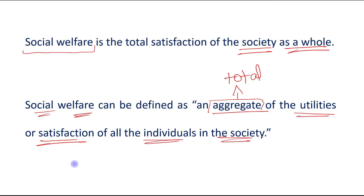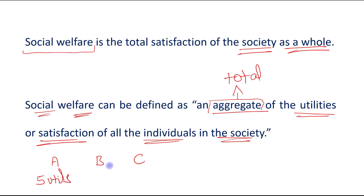Suppose there are three individuals in the society: Individual A, Individual B, and Individual C. Individual A is getting a utility or satisfaction of, let's suppose, five utils. Individual B is getting a utility or satisfaction of, let's suppose, ten utils. And Individual C is getting a utility or satisfaction of, let's suppose, five utils.